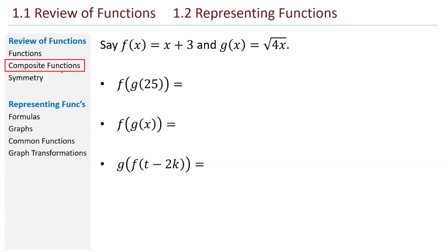Alright, composite functions. Let's say we have two different functions. f(x) is x plus 3, and g(x) is the square root of 4x. How would I figure out f of g of 25? So I always work from the inside out. The first thing I want to do is figure out g of 25. And so I go to the g function, I plug in 25, so that looks like the square root of 100. Square root of 100 is 10. So I'm going to replace g of 25 with 10. And f of 10, now I go up to my f function, 10 plus 3 is 13.